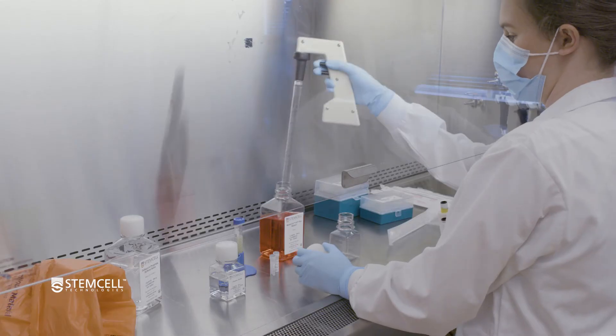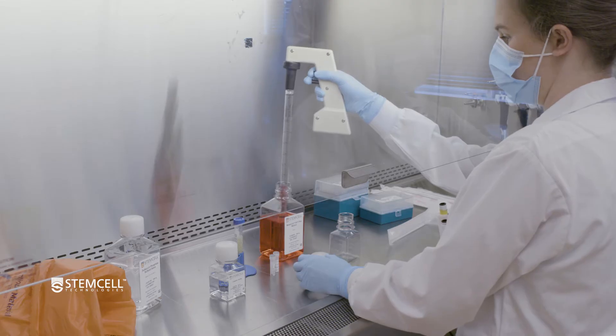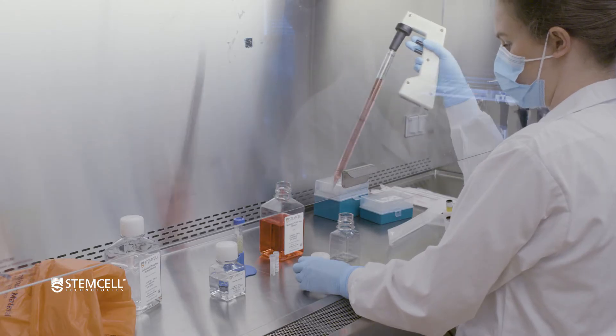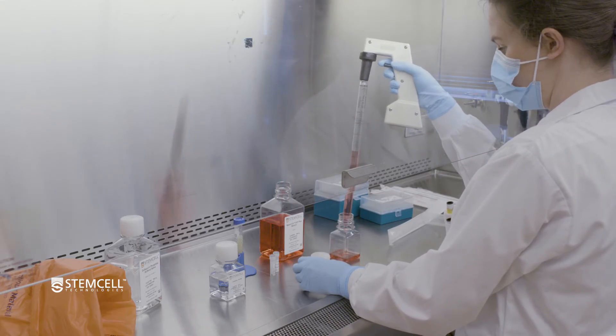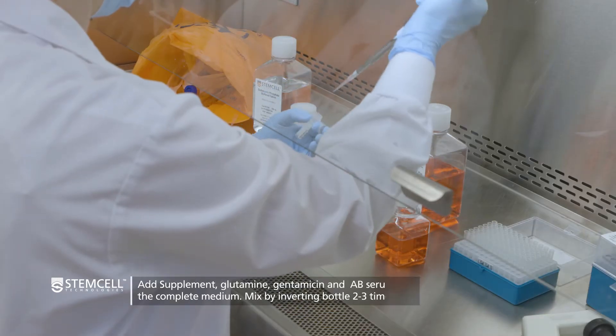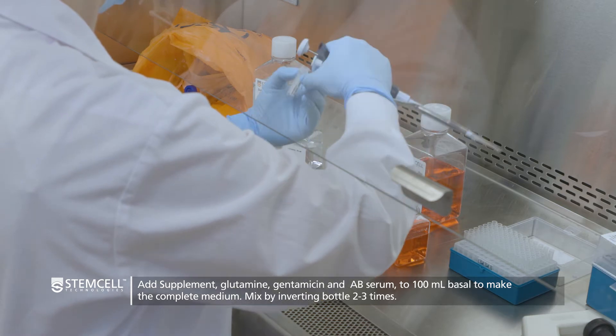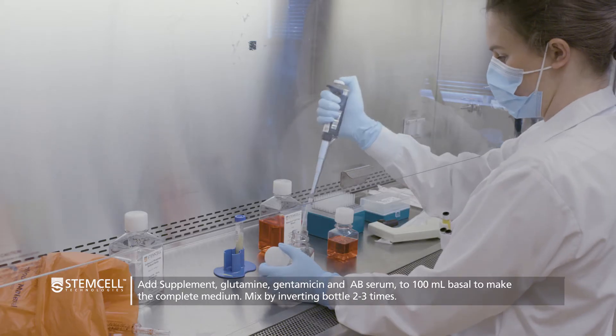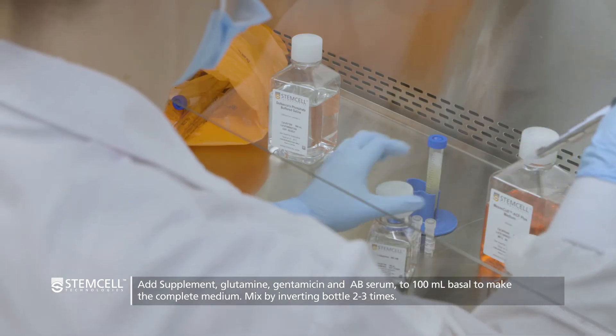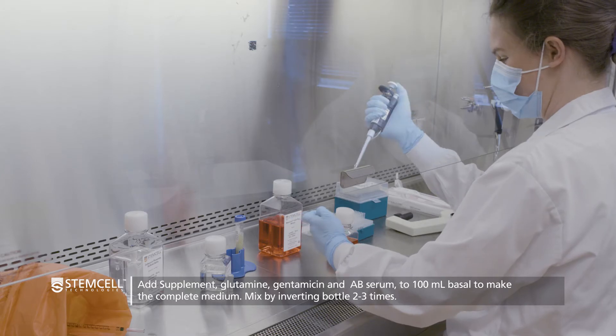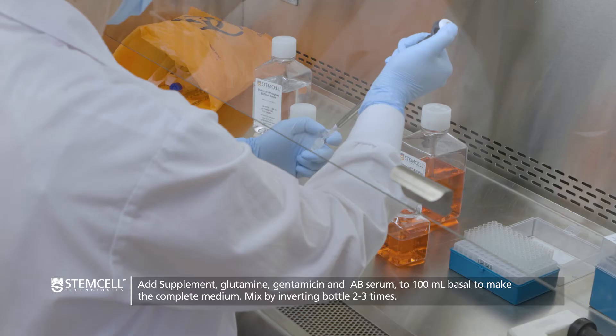To make 100 mls of complete medium, add 96.2 milliliters of MesenCult ACF Plus Medium, 200 microliters of MesenCult Umbilical Cord Derivation Supplement, 1 milliliter of L-Glutamine, and 100 microliters of 50 milligrams per milliliter Gentamicin.